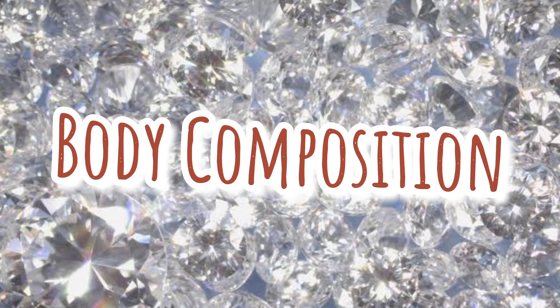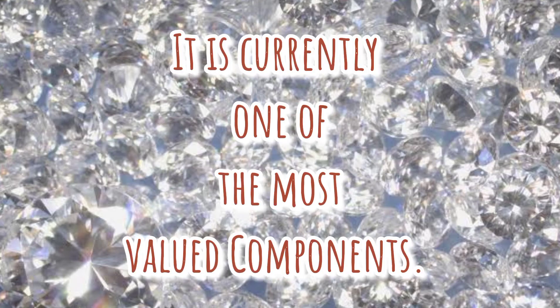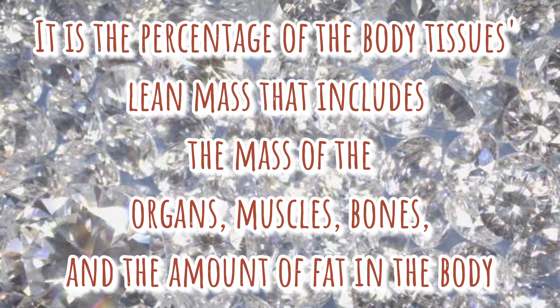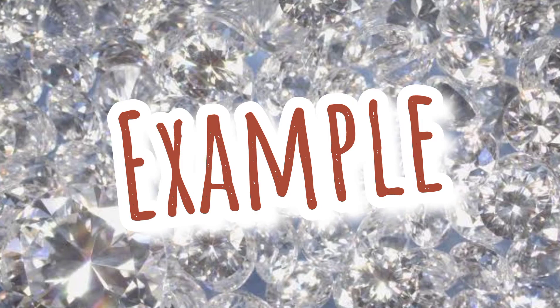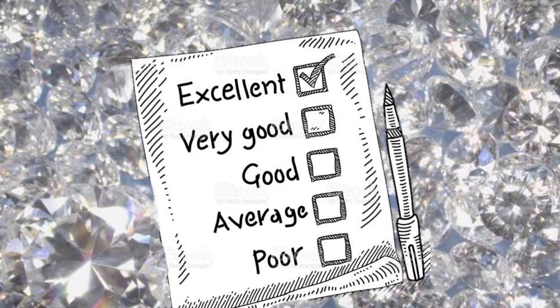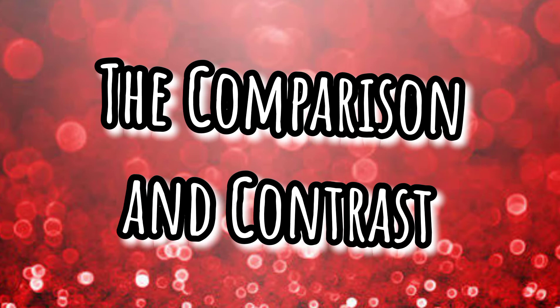Next, and not the least, is body composition. It is currently one of the most valued components and refers to the proportion of body tissues — lean mass, which includes the mass of organs, muscles, and limbs — and the amount of fat in the body. An example is taking a BMI test to check if you are healthy.